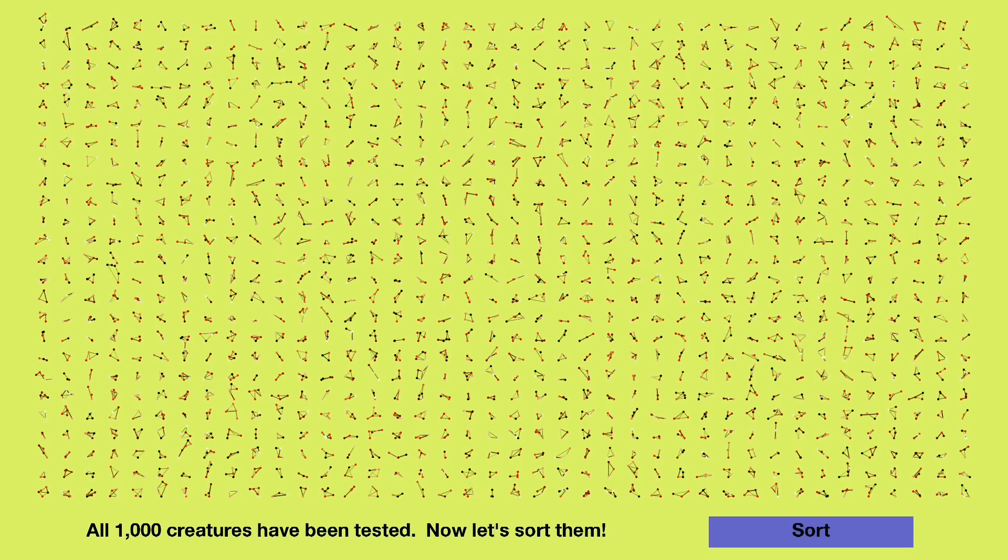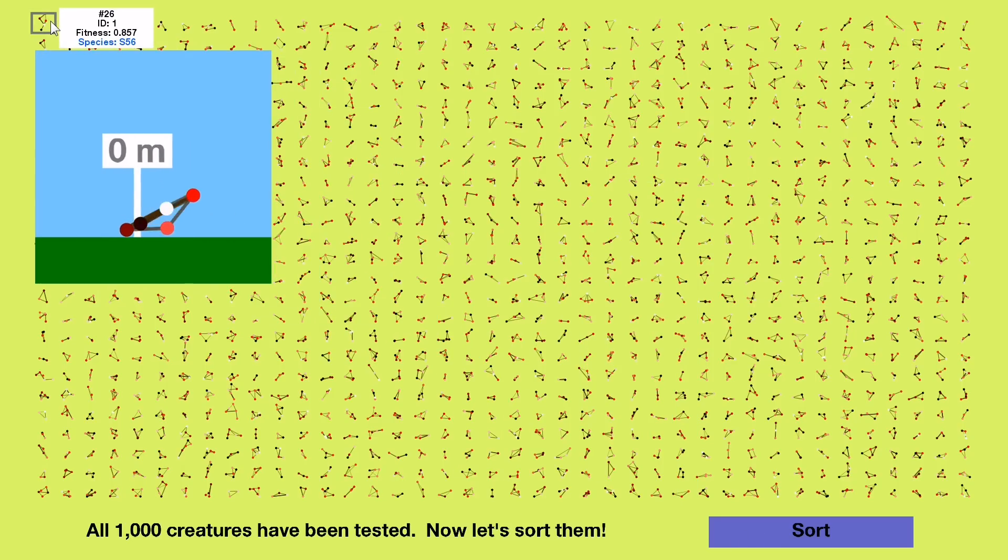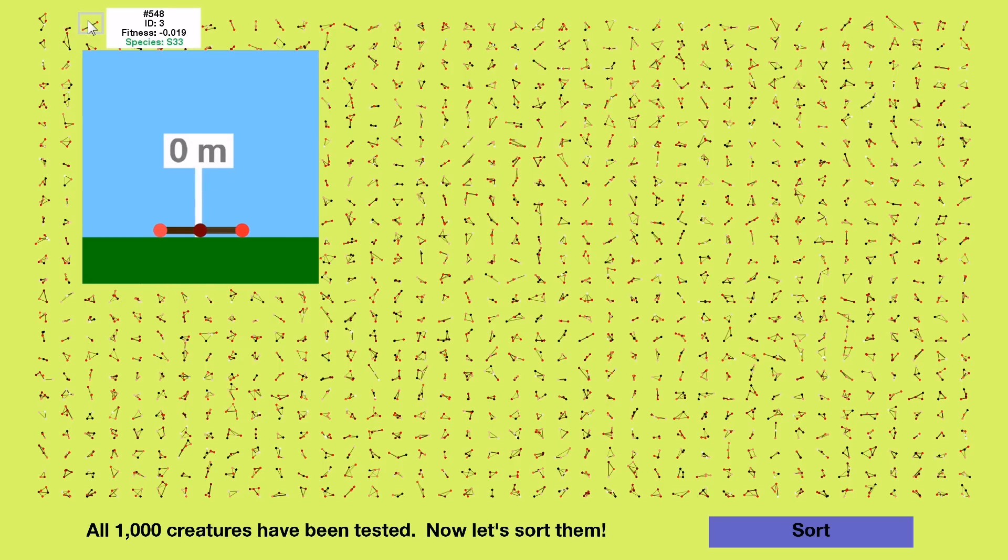All 1,000 creatures have been tested. You can see creature 1 in the upper left. That's the one that kept collapsing and getting up again. And here's the rest of the first four.